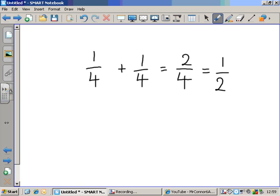And you'd be right because you can simplify that fraction by dividing the numerator and the denominator by two. Simplifying fractions is something we'll talk about later. But that's an easy question. One quarter plus another quarter is two quarters. We all understand that.